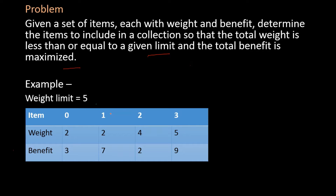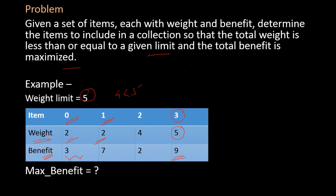For example, given a set of 4 items with their corresponding weights and benefits, which items should we choose if the weight limit is 5 and we want to maximize benefit? Choosing just item 3 hits the weight limit of 5 with benefit 9. Choosing items 0 and 1 gives total weight 4 and benefit 10, which is greater than 9. Any other combination yields benefit no greater than 10, so the optimal solution is items 0 and 1 with maximum benefit of 10.